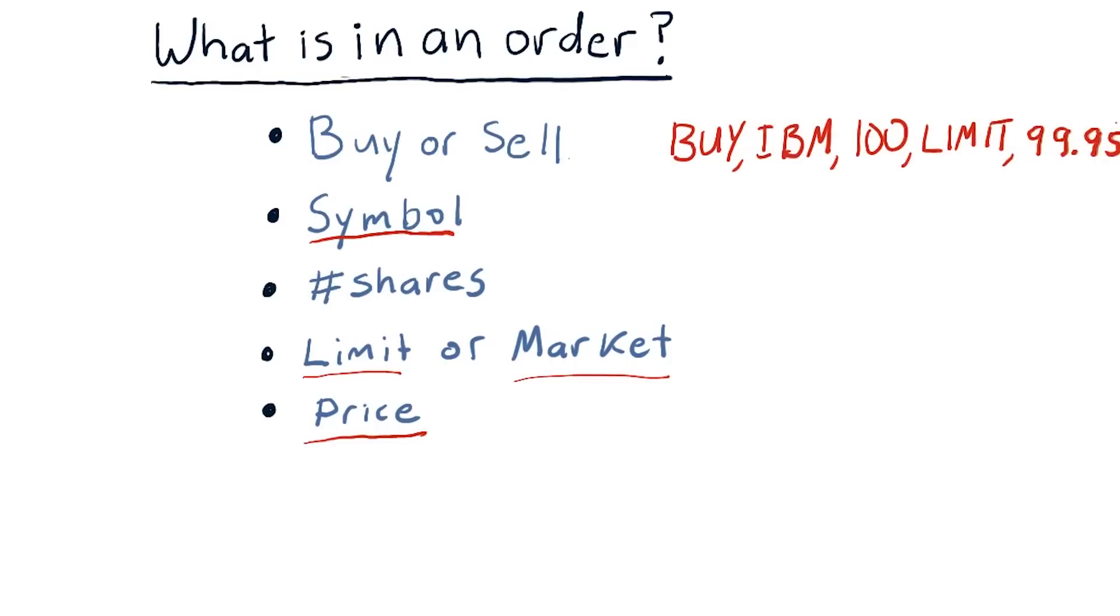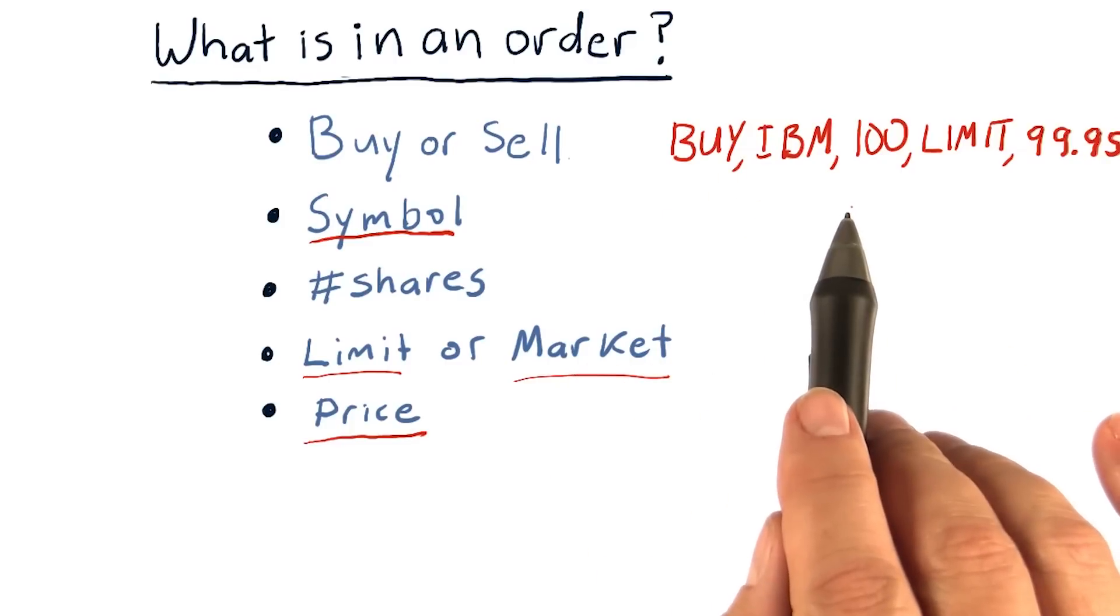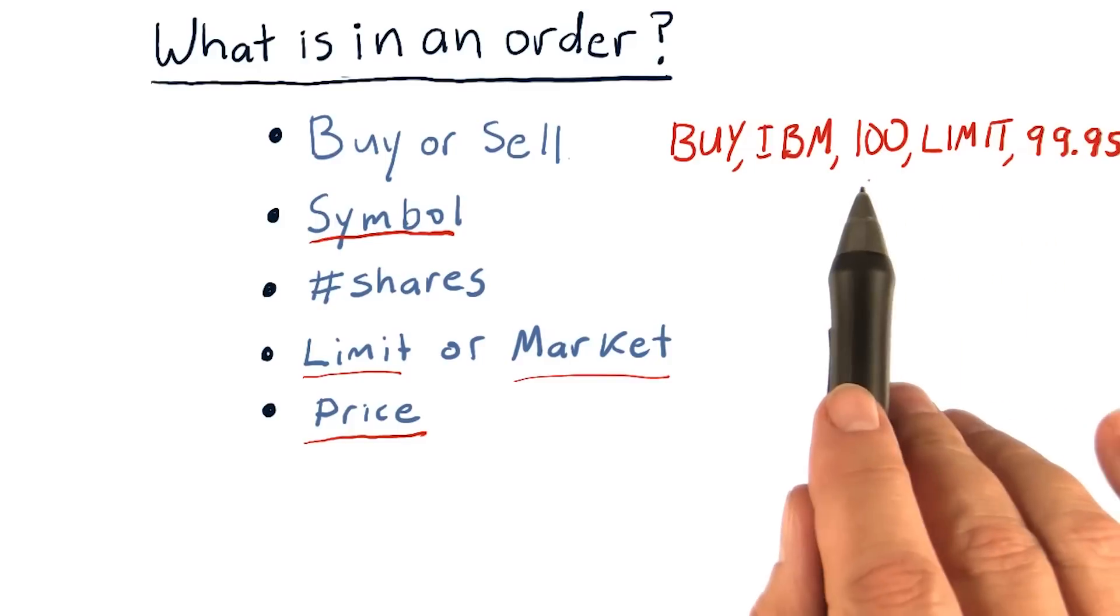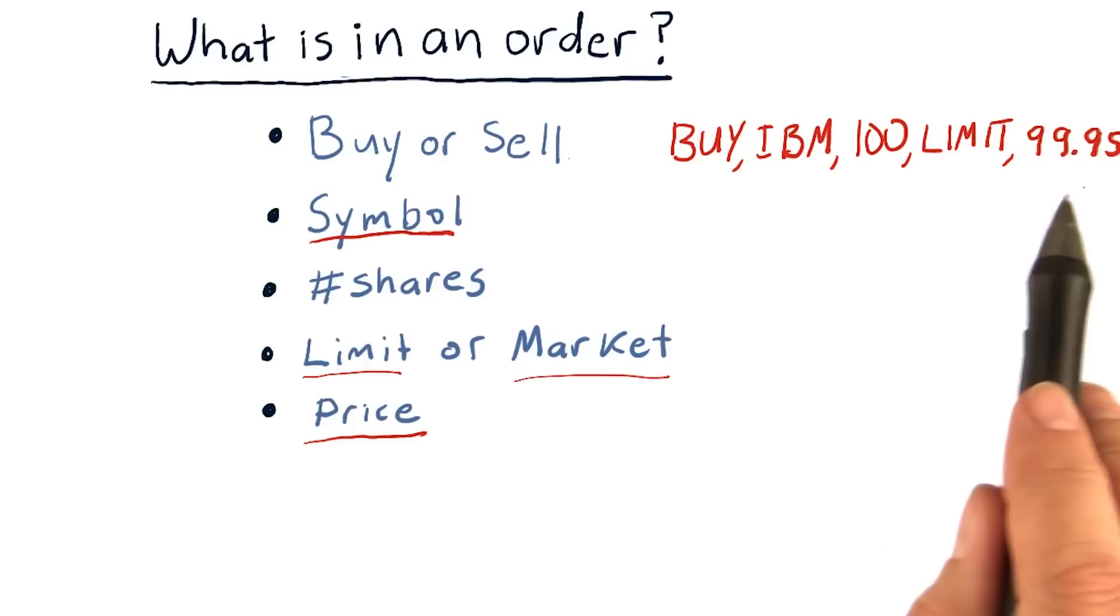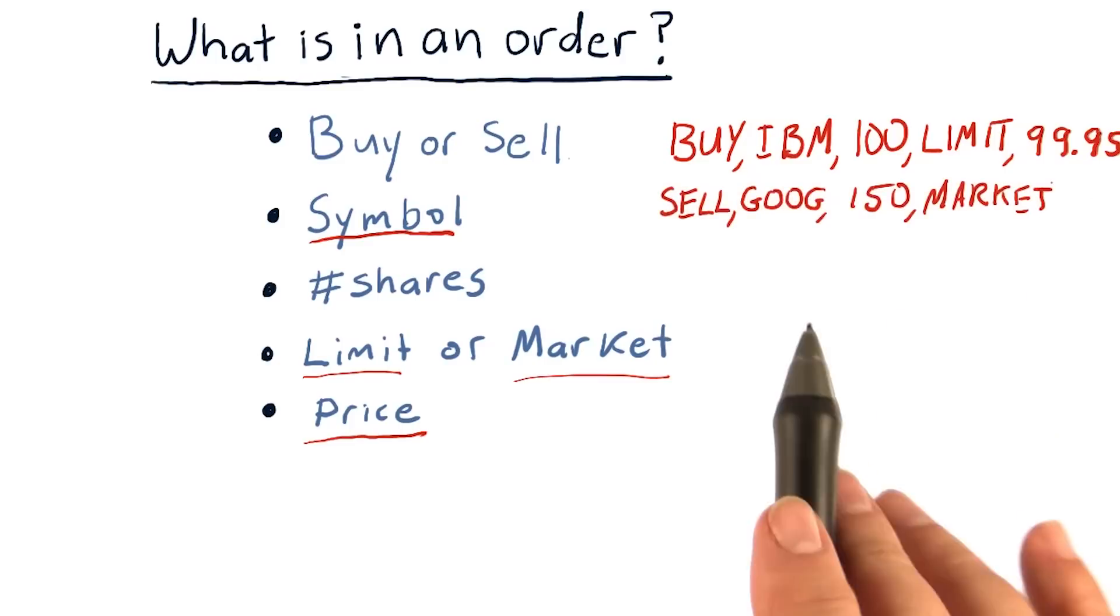Let's take a look at a couple example orders. Here's one, buy IBM 100 shares limit 99.95. So this means I want to buy 100 shares of IBM at no more than $99.95. Another example,